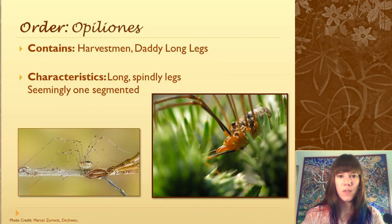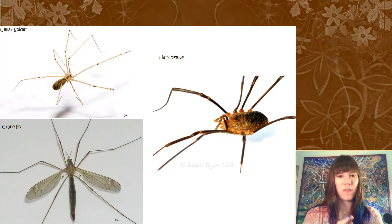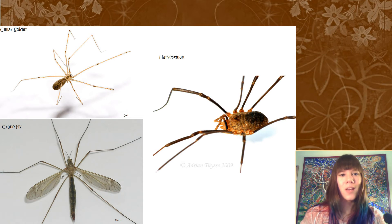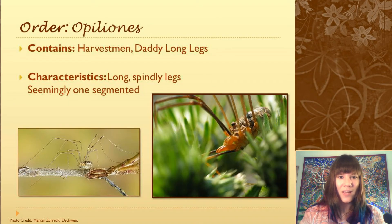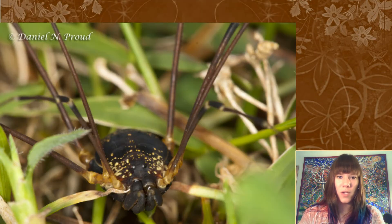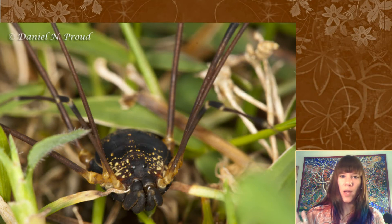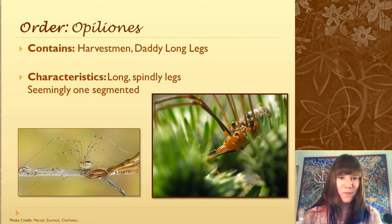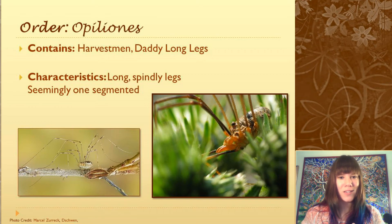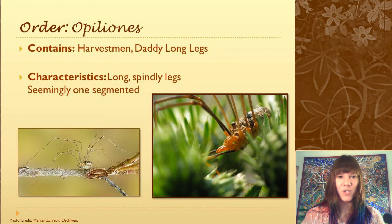The next order is Opiliones, or the Harvestmen, also known as Daddy Long Legs. If you use the common name Daddy Long Legs, just realize that a lot of things share that name — there's a cellar spider, these guys, and the crane flies. The characteristics are that they have long spindly legs and they're seemingly one-segmented. There's a myth that Daddy Long Legs are the most venomous thing on the planet but their fangs are too short to break through your skin. It is true their fangs are too short, but it is NOT true they're venomous — none of them have venom glands. The ones in North America are mainly decomposers or scavengers. Sometimes if you pick them up they'll stink up your hand, but that's about it.